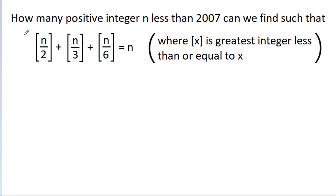In this video, we have to find how many positive integers n less than 2007 we can find such that the greatest integer of n by 2 plus greatest integer of n by 3 plus greatest integer of n by 6 is equal to n.